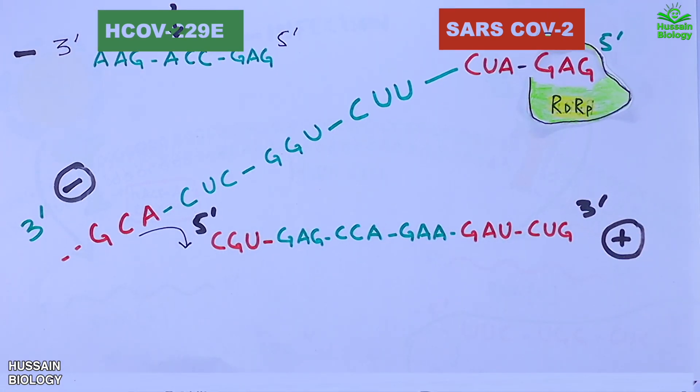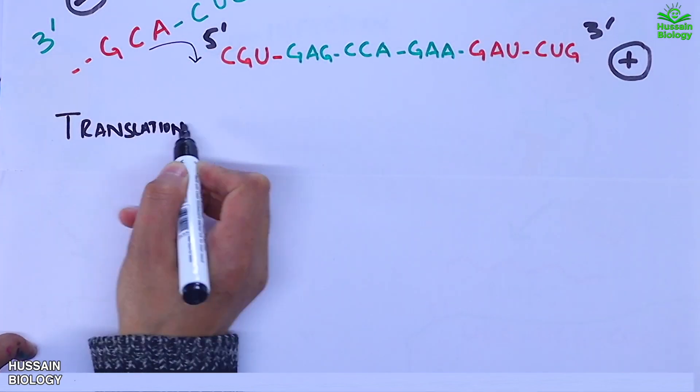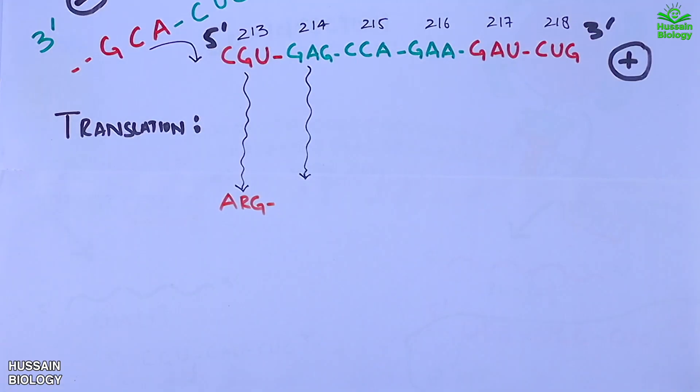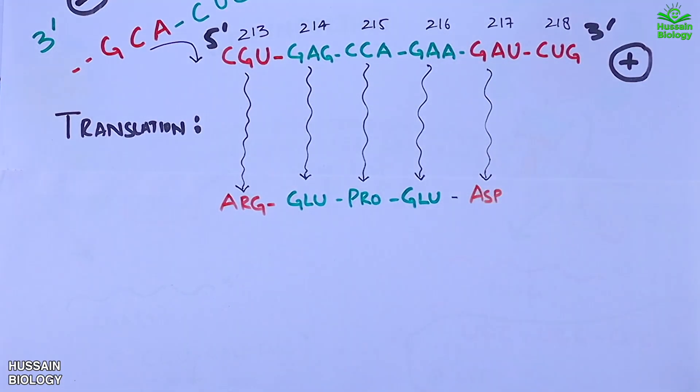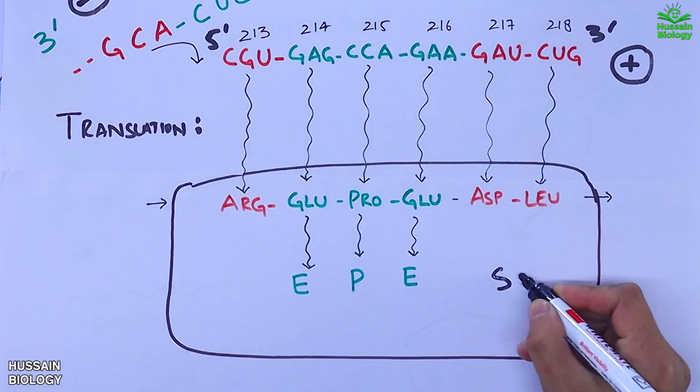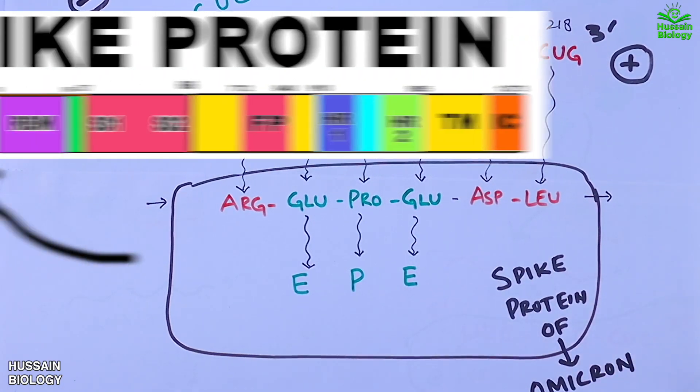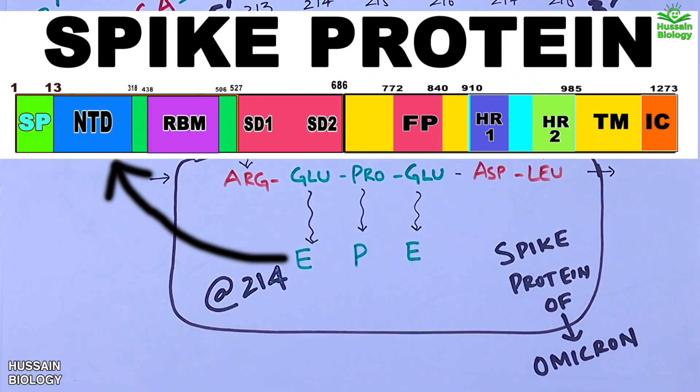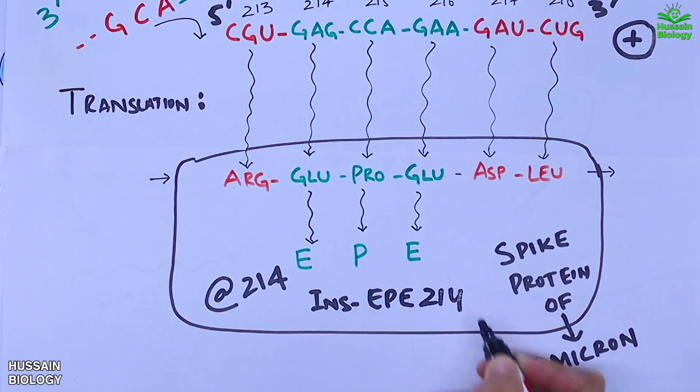Now this strand will act as mRNA strand and we'll get into the translation process. And in the translation process we get arginine, glutamate, proline, glutamate, aspartate, leucine. So the three insertions from HCOV-229E virus are coded as EPE—that's glutamate, proline and glutamate. And this sequence is found in the spike protein of Omicron variant of SARS-CoV-2 at 214 position. And it's accordingly named as INS-EPE-214. That's insertion of EPE at 214.